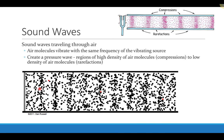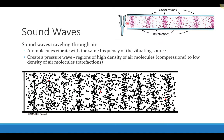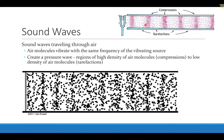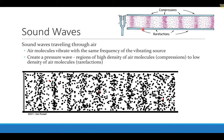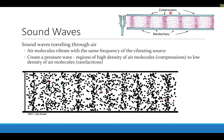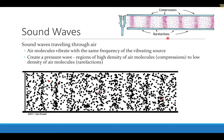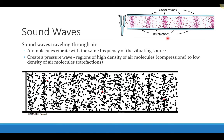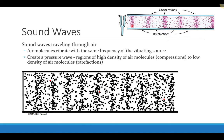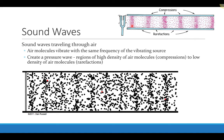Air molecules are being bunched together and then separating apart. The regions where you have a lot of air molecules together have a higher pressure, and regions where they're spread apart have a lower pressure. The regions of high pressure are called compressions, and regions of low pressure are called rarefactions. So sound traveling through air is actually a pressure wave, and it's those changes in pressure that actually describe the sound wave.